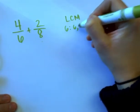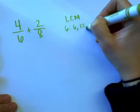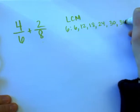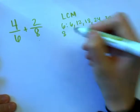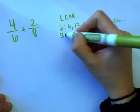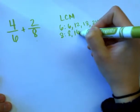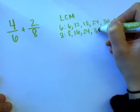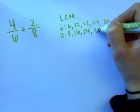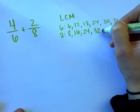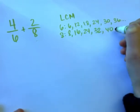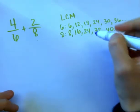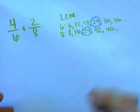I'm going to list out the multiples of six: 6, 12, 18, 24, 30, 36. And the multiples of eight: 8, 16, 24, 32, 40. I already see a multiple that they have in common — they share the multiple 24, which is the lowest multiple that they share. So I'm going to use 24 as my new denominator.